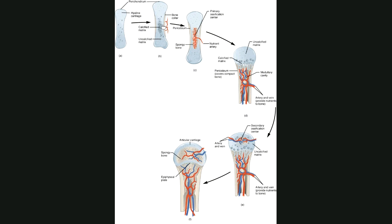These cells in the middle — these chondrocyte cells — grab a bunch of calcium and put it down around them. Unfortunately, when they start putting calcium around themselves, that's not great for their overall health, so they start to get sick or kind of die a little bit.